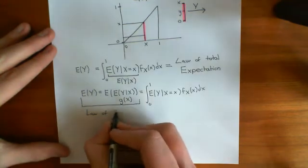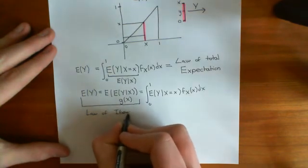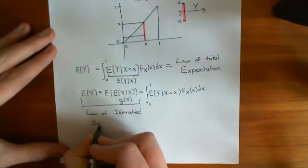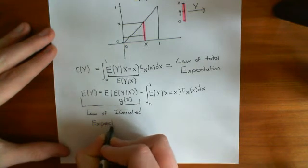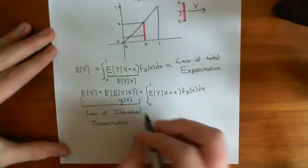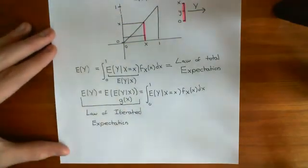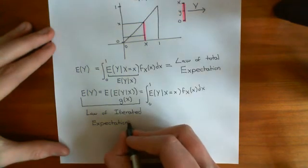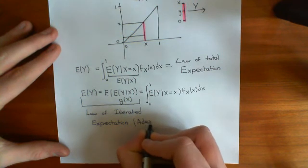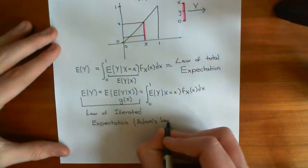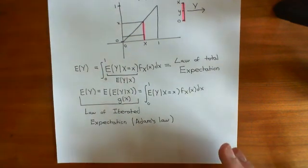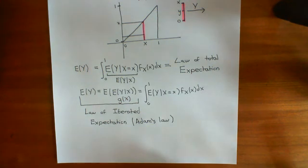The law of iterated expectations also has another name: Adam's Law. The reason it's called that is that there is another law regarding conditional variance called Eve's Law, so Adam's Law and Eve's Law interact very nicely. So that's the law of iterated expectations, or Adam's Law. Now let's use the law of total expectation to actually calculate our problem — we'll continue this in the next video.